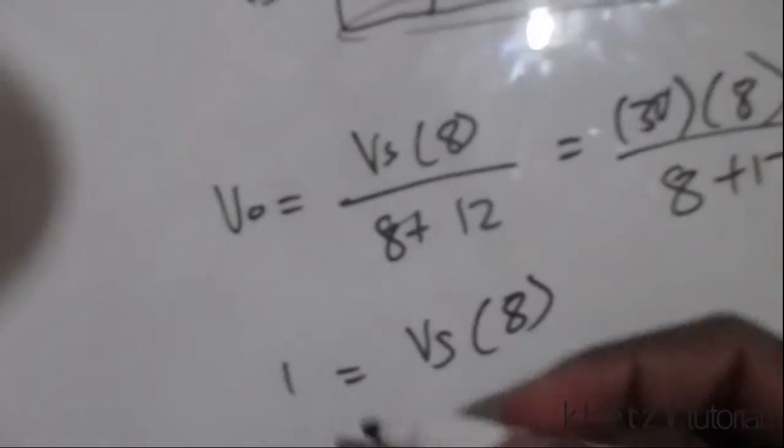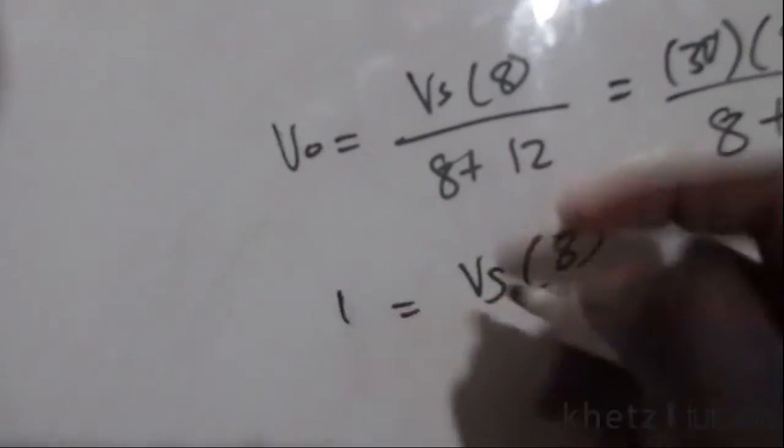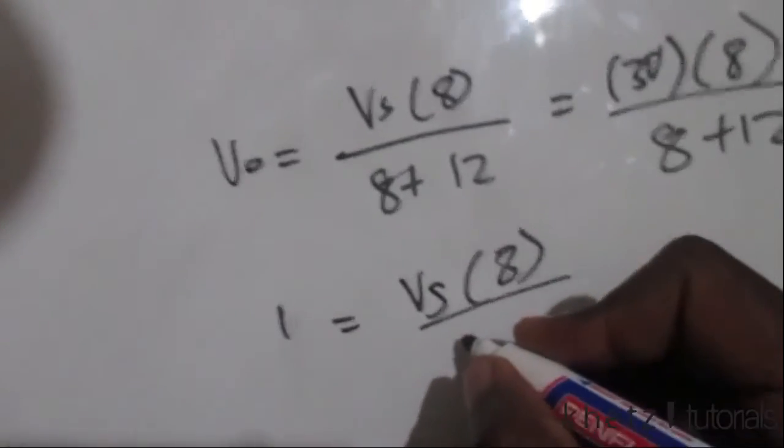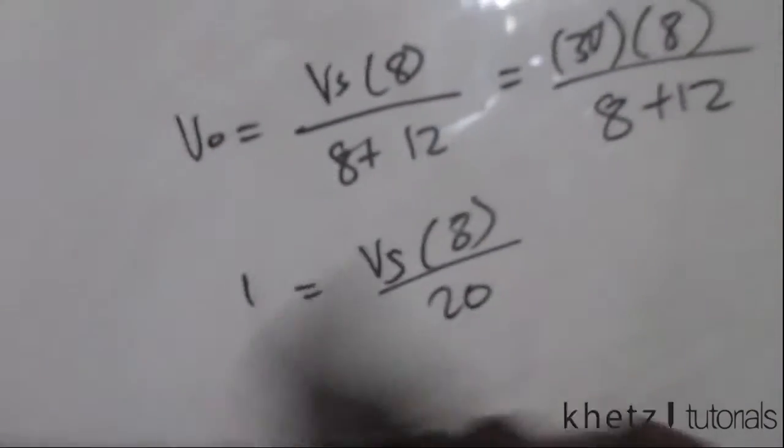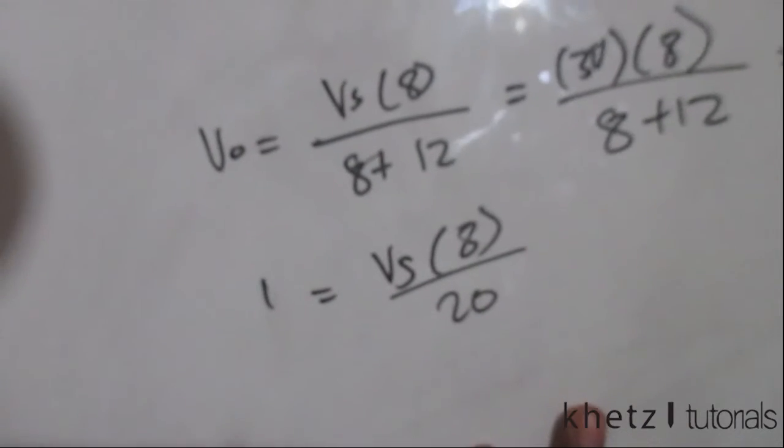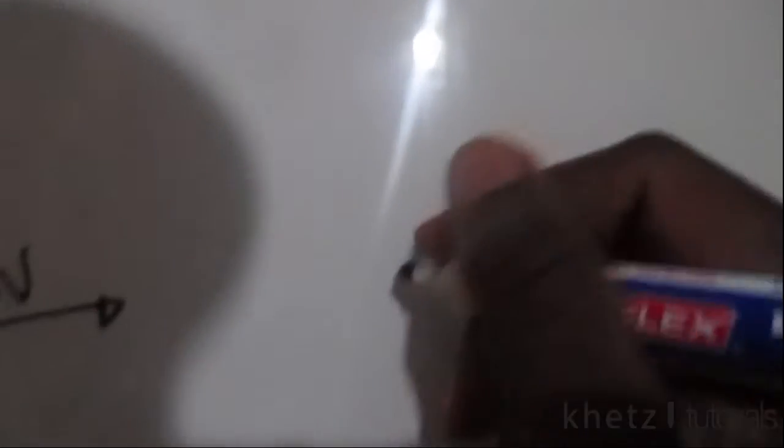We have 1, which is our assumption given in the question. We now want to find, divided by 8 plus 12 which is 20, we now want to find what vs would be in this case, so we can actually find the relationship between the input and the output, assuming that our output is vo.